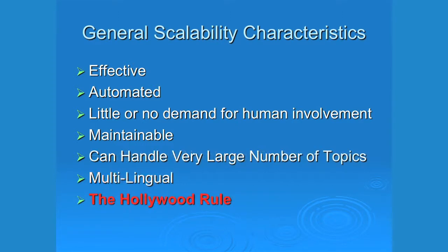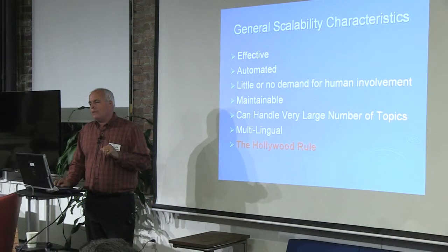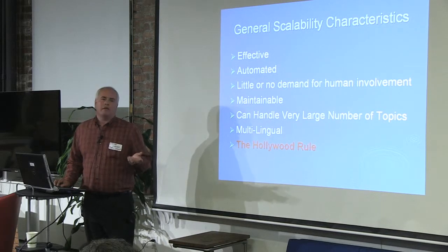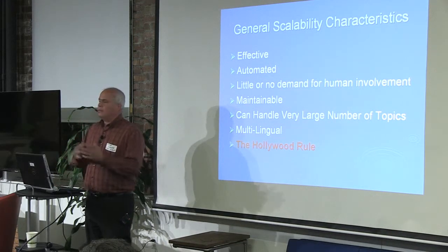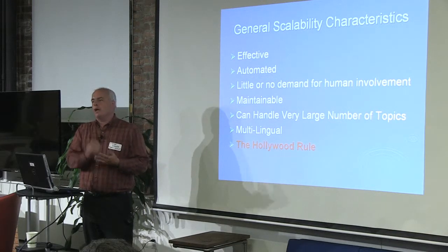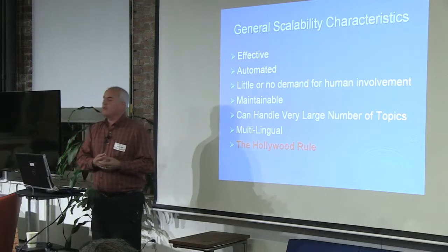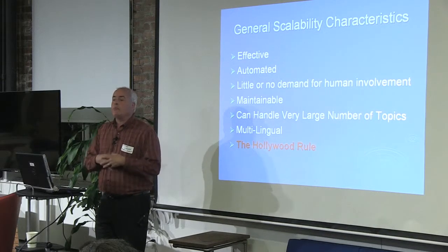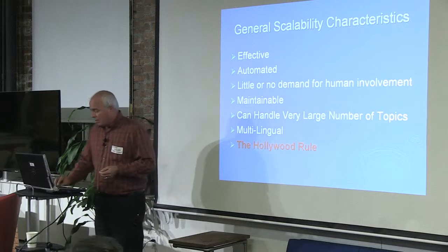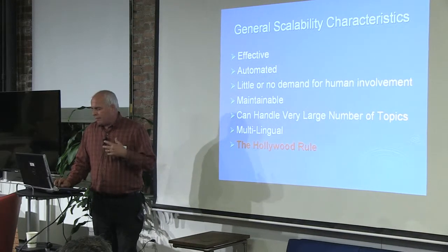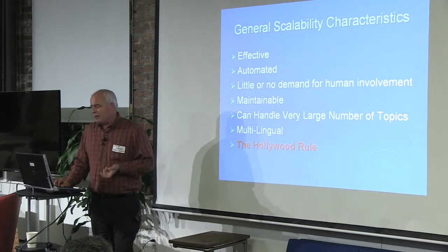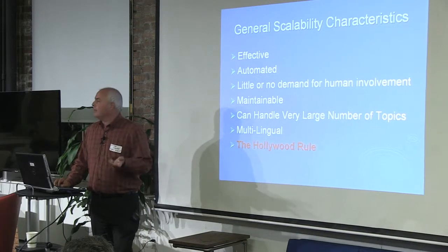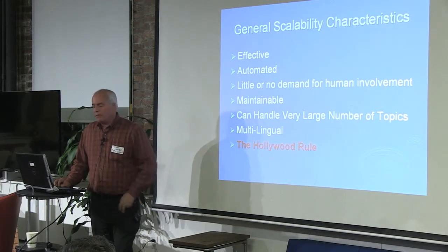One issue with text classification vendors is that they describe their processes, tools, and APIs, but you don't see many actual topics — which is very strange. If a system is so good at this, you'd expect to see thousands and thousands of topics. So I came up with a rule I call the Hollywood Rule: if you've got it, you flaunt it.